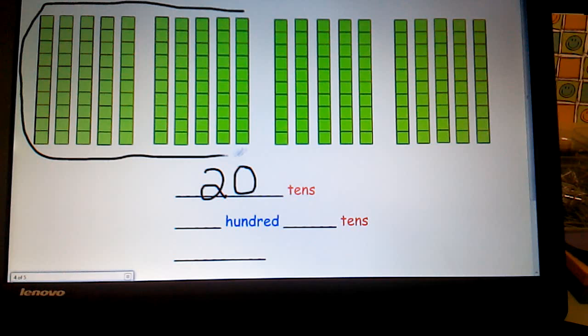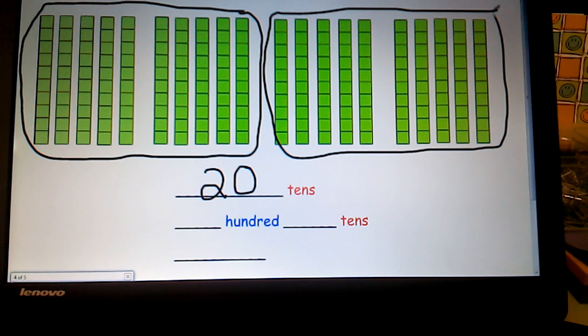I can see one group of hundred, one flat, and the same over here. So you can see that I circled two groups. That gives me two hundred with no tens left over. This three digit number is two hundred.